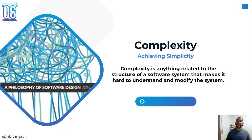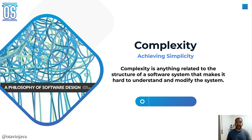A Philosophy of Software Design is my favorite book, especially because simplicity is one thing I enjoy most. The first topic of the book is to fight complexity — and how to achieve that? By achieving simplicity. The book mentions how complexity grows over time and how to measure it. It has a clear definition: complexity is anything that makes the structure of a system hard to understand and to modify.